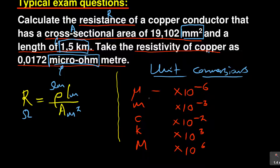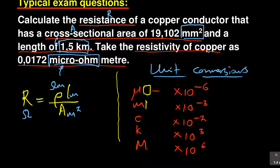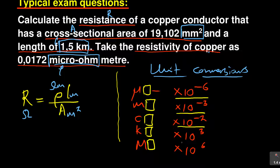For example: micrometers means multiply the meter by 10 to the power of negative 6. You could have millimeters, centimeters, kilometers, or megameters. Similarly for ohms: micro-ohms, milli-ohms, centi-ohms, kilo-ohms, mega-ohms — it doesn't matter. You still multiply by the same corresponding power. The prefix before the unit tells you what operation to apply.